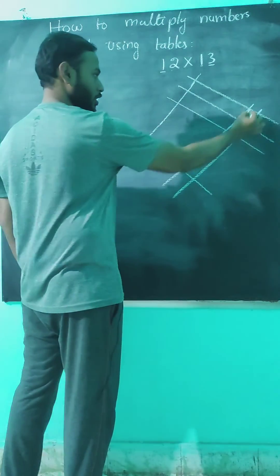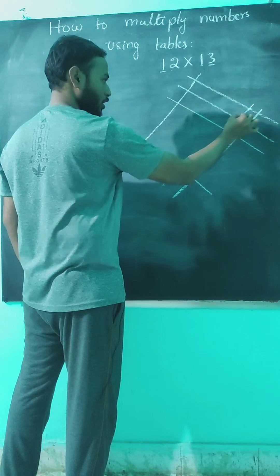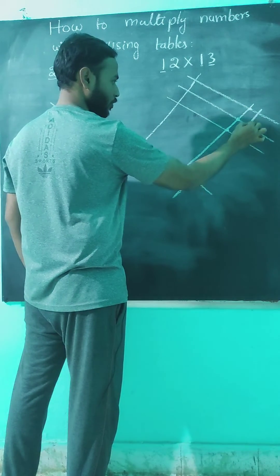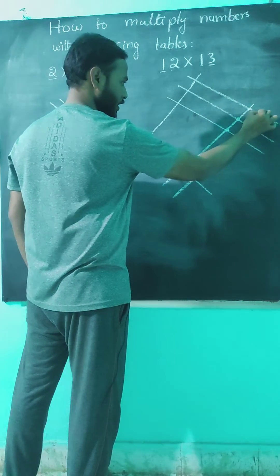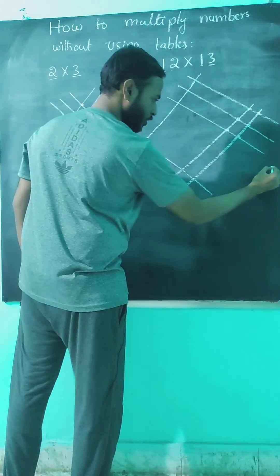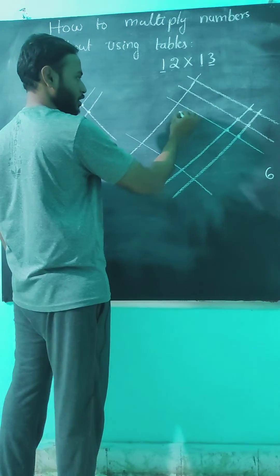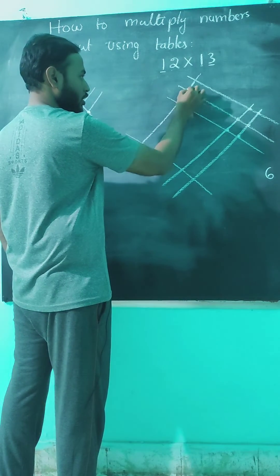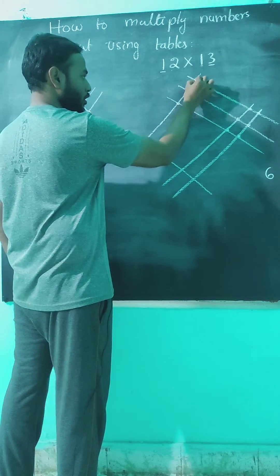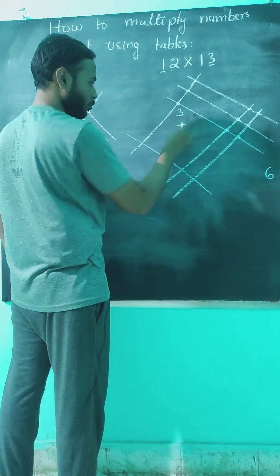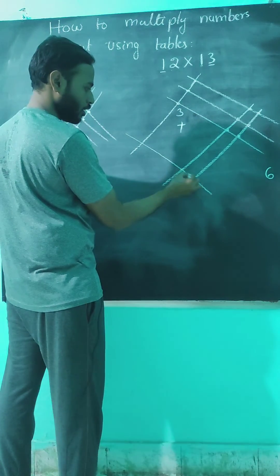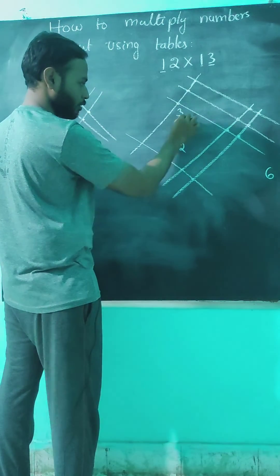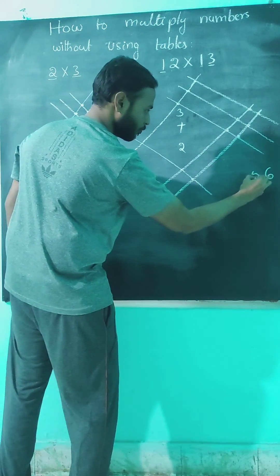Count the intersections. First group: 1, 2, 3, 4, 5, 6. Middle group: 1, 2, 3 — then 3 plus 1, 2 — so 3 plus 2 equals 5. Answer: 1, 5, 6 — that is 156.